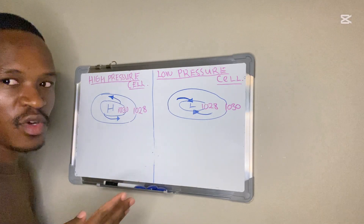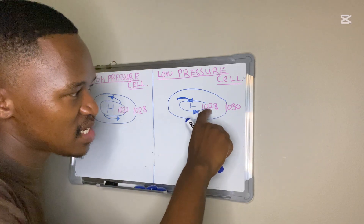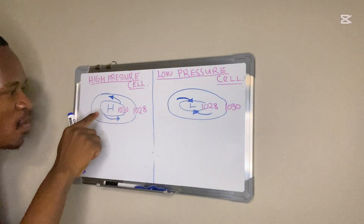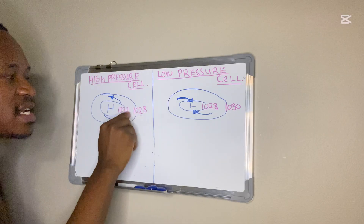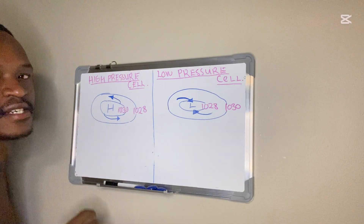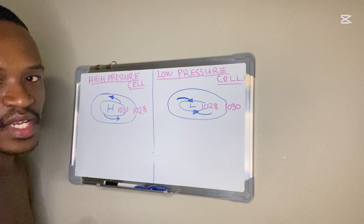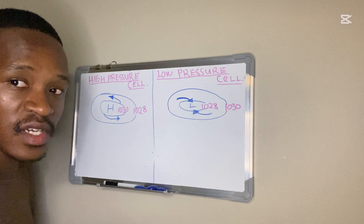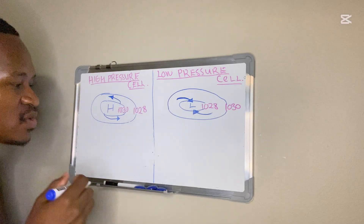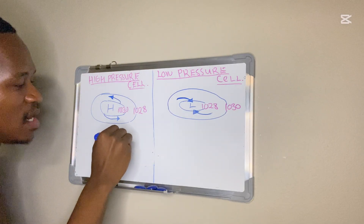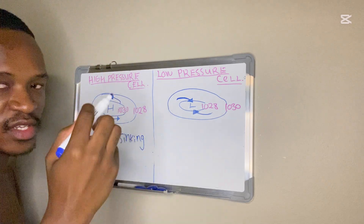They can ask you on a synoptic map: why is this a low pressure? The answer is the isobar values are decreasing towards the center. So look at the isobar values, the air circulation, and whether the winds are converging or diverging. A high pressure is associated with sinking air, while a low pressure is associated with rising or ascending air.